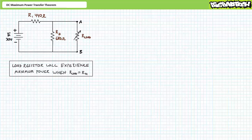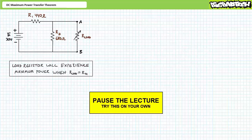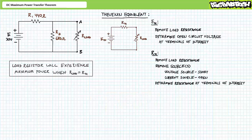Consider this series-parallel circuit supplying variable load resistor R-load. R-load will receive maximum power when R-load is exactly equal to the Thevenin's equivalent resistance for this circuit. If you've been following this lecture series in its intended order, you'll realize that this is the exact same circuit we used to introduce Thevenin's theorem. Here's a review of the steps we used to determine the Thevenin's equivalent of the circuit.